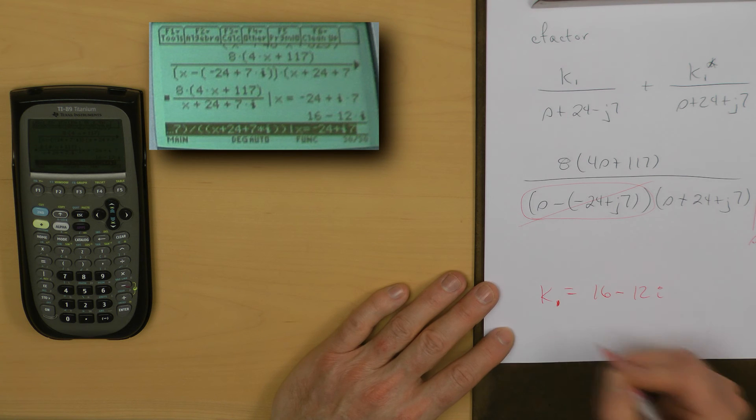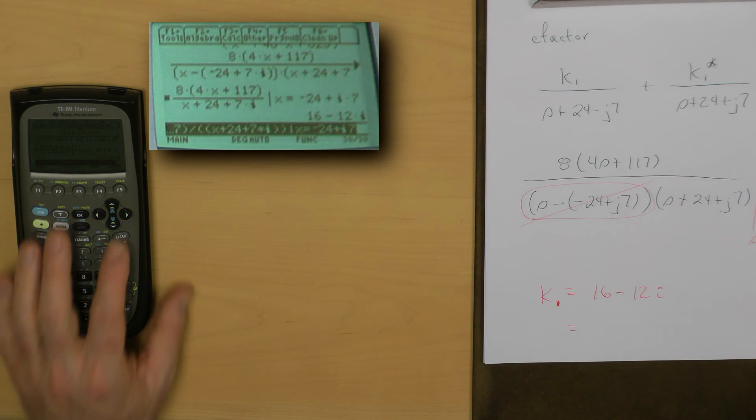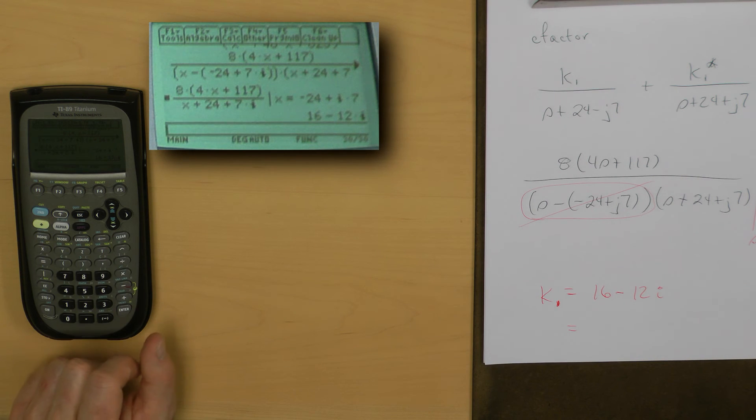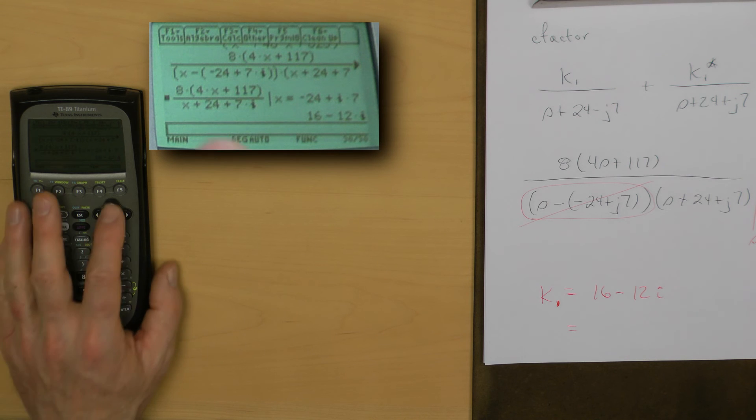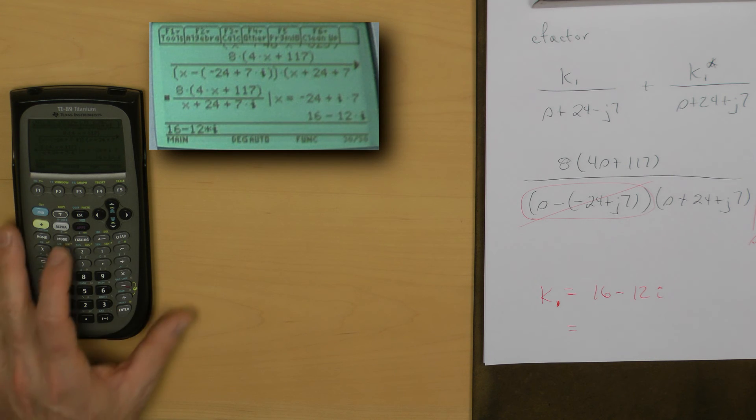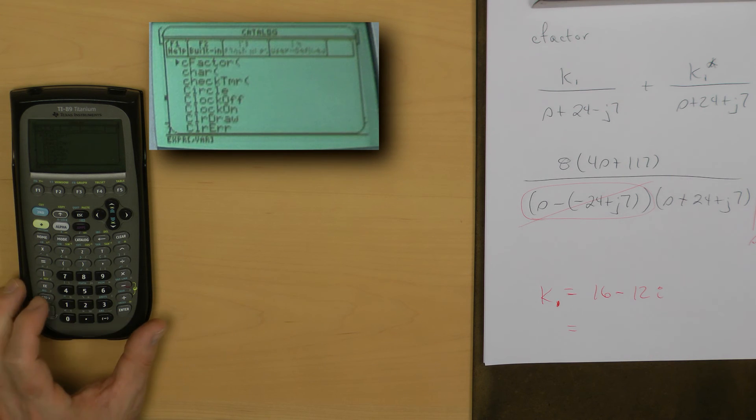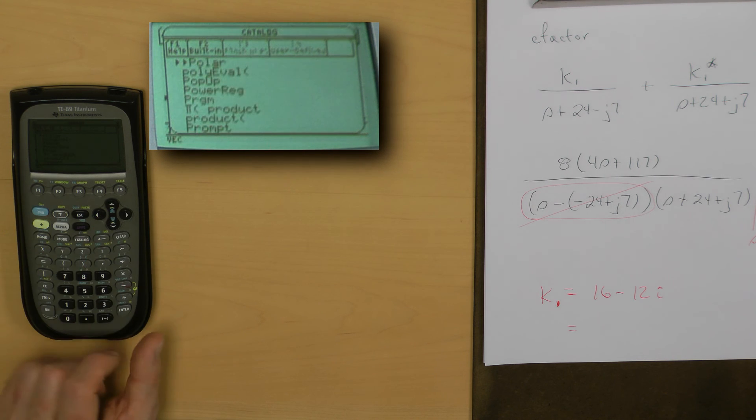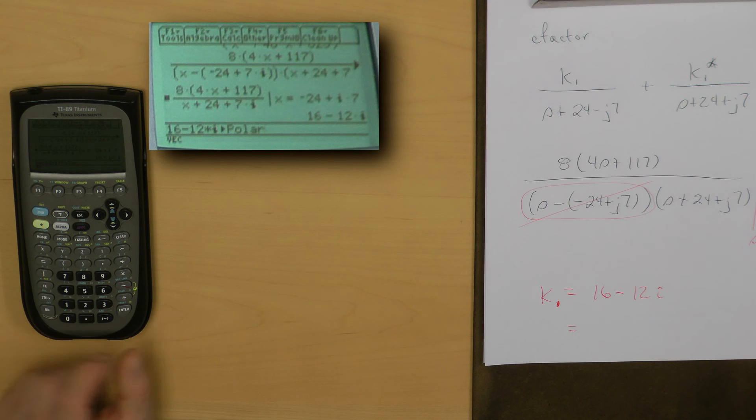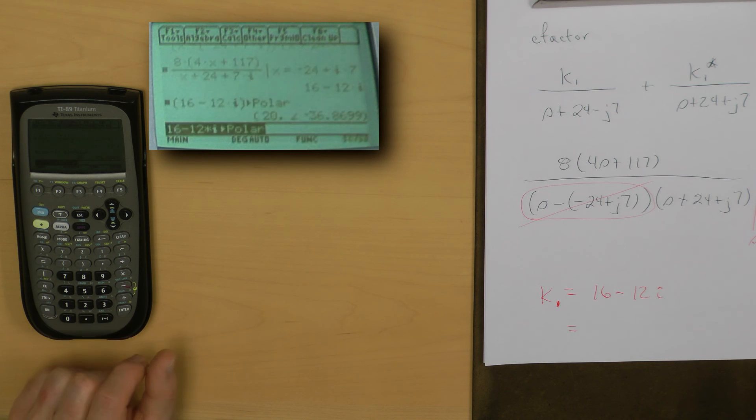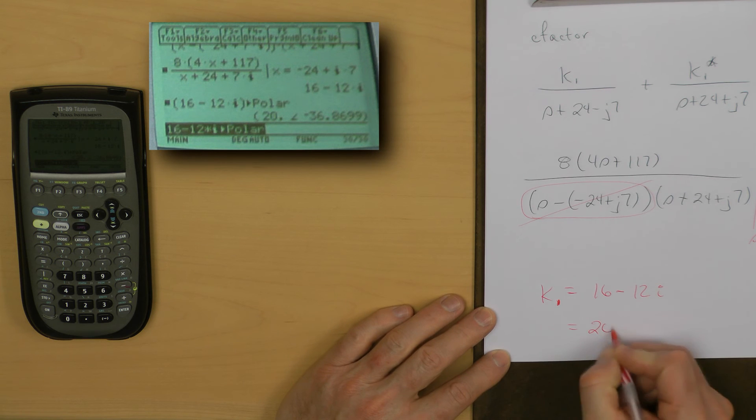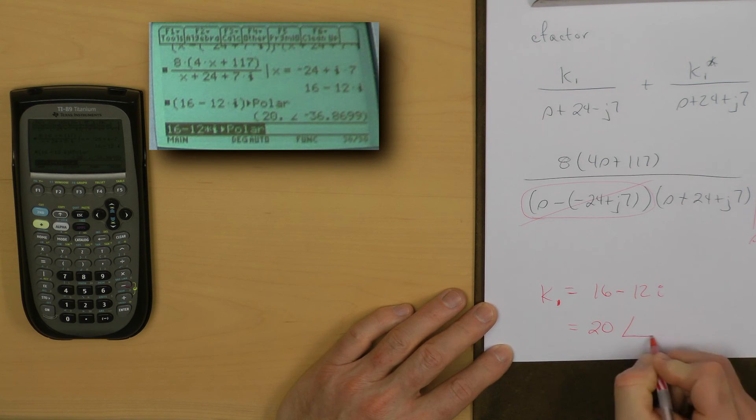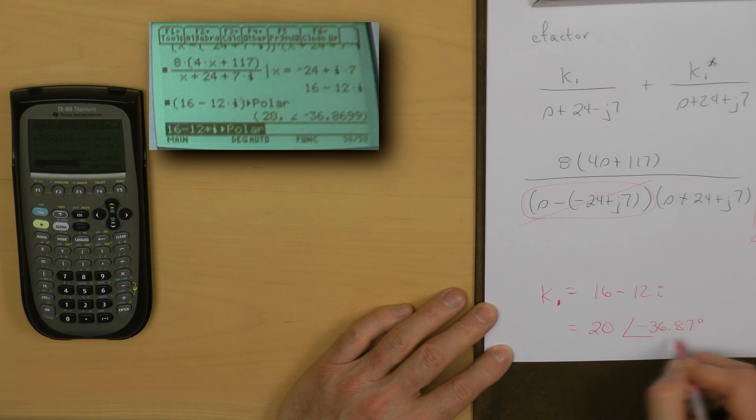I can actually find that in polar form if I want to. Let me clear the input command line. I will now grab that result, go into the catalog of commands and find my polar which is basically at the bottom of that first screen. Now I will do a green diamond enter to obtain that this is now 20 in magnitude at an angle of minus 36.87 degrees.